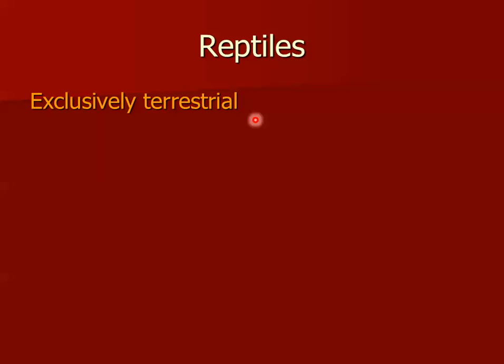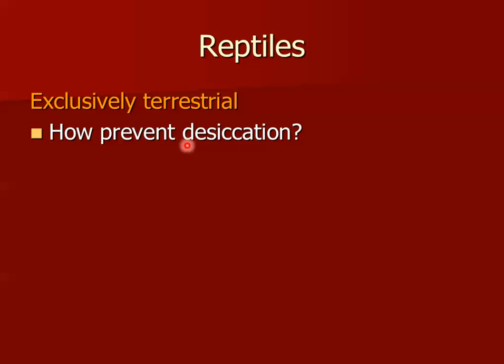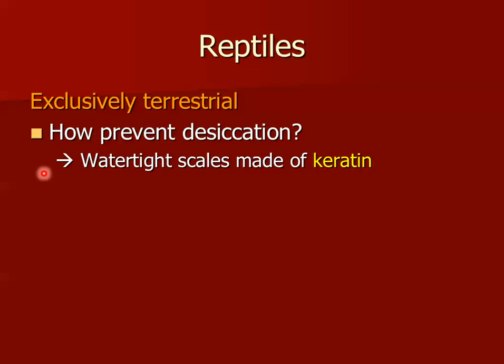Reptiles are the group of vertebrate animals that are exclusively terrestrial. They learned how to reproduce, live, and breathe without being tied to a body of water. How do reptiles prevent desiccation — dehydration, drying out in the sun? Well, reptiles are covered with scales made out of keratin, and these scales are watertight. So a reptile, a turtle, a crocodile can lay out in the sun all day and will not dehydrate.